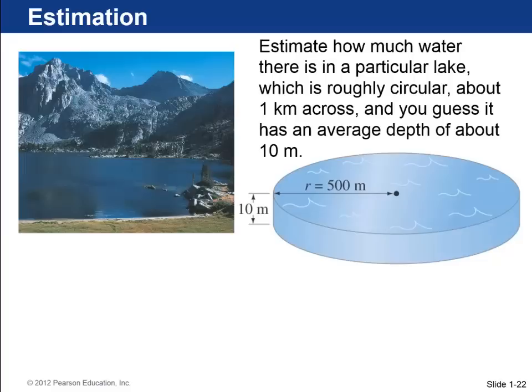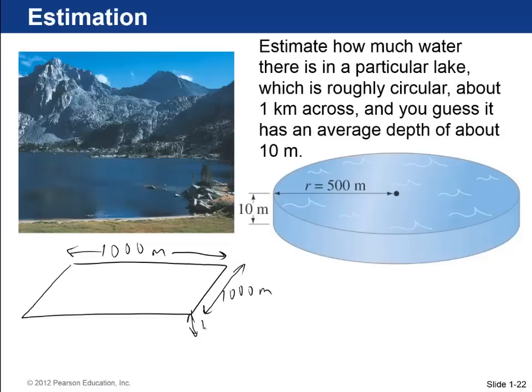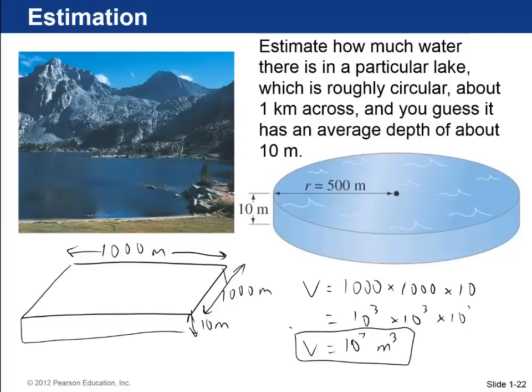Okay, you could take the volume of a cylinder. I could even draw a simpler diagram. If it's 1 kilometer across, that's 1,000 meters. And if it's about a square, then that's another 1,000 meters this way. That's the top surface. And then it's 10 meters deep. So I'm going to approximate this as a rectangle. And so then the volume is going to be length times width times height. So 1,000 times 1,000 times 10. And then I get 10 to the power 3, times 10 to the power 3, times 10 to the power 1. 3 plus 3 plus 1 is 10 to the 7. So it's 10 to the 7 meters cubed. That's an example of estimation.